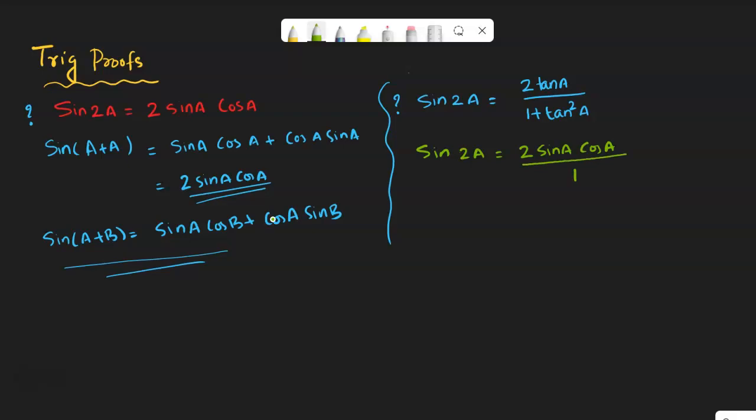So let me put it over one just to make a fraction for the proceeding of our proof. Okay, so I can rewrite or I can plug the value of sin square a plus cos square a in place of one. So 2 sin a cos a over one can be written as sin square a plus cos square a.